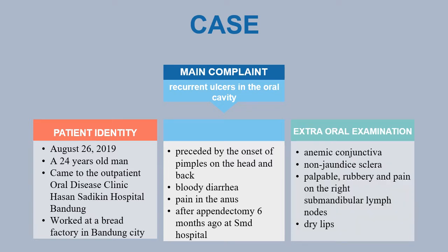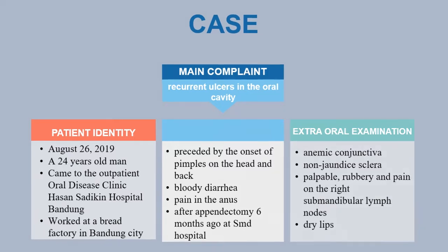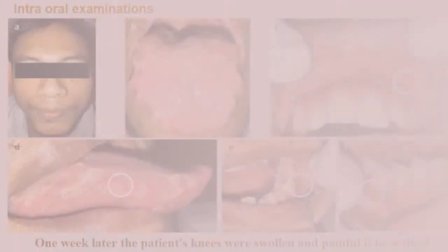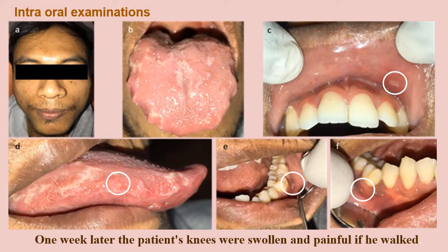Extraoral examination revealed anemic conjunctiva, non-jaundice sclera, palpable rubbery and painful right submandibular lymph node, and dry lips. Intraoral examination showed oval ulcers, various sizes, shallow, concave-based, with irregular borders surrounded by an erythematous area of the upper labial mucosa, right lateral tongue, and gingival regions 14, 13, 16, and 46.